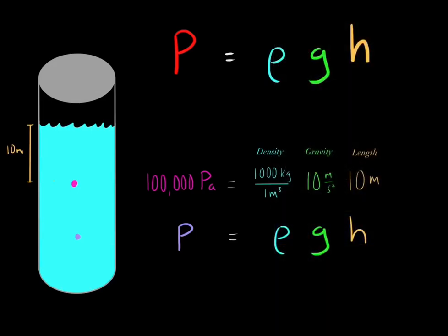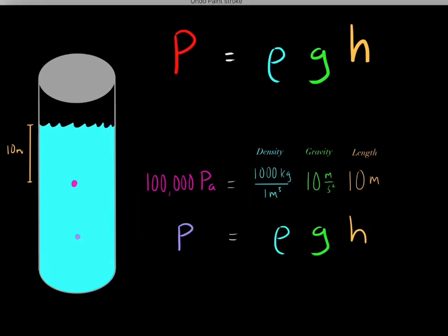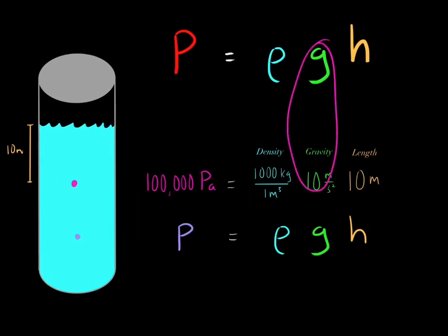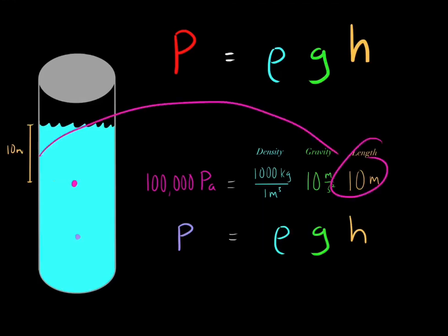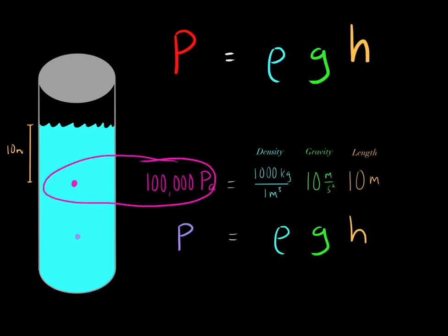For example, if we wanted to find the pressure at a given point, we would need to find the density of this liquid. We look in a textbook and see the density of water is 1,000 kilograms per meters cubed. We know g is the acceleration due to gravity, which is 10 meters per second squared. This particular point is 10 meters from the surface, so we plug in 10 meters and get a pressure of 100,000 pascals.